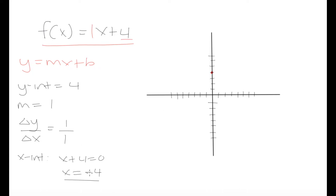Then we have our x-intercept where x equals negative 4, which is 1, 2, 3, 4 units to the left — right over here. It's actually possible to sketch this graph using only the y-intercept and x-intercept. We don't need the slope to sketch it, because having two points means we can simply join these two dots with a line, giving a pretty close approximation of the graph.